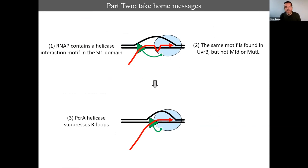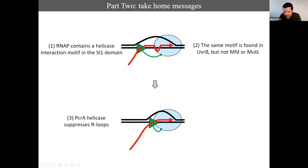Over-expressing a transdominant dead PcrA, or the native C-terminal domain but not a mutated version that can't bind RNA polymerase, led to increased R-loops. This is consistent with the interaction of PcrA with RNA polymerase reducing R-loop formation in cells. The same effect is seen in an E. coli deletion lacking UvrD. The take-home message is that RNA polymerase contains a helicase interaction motif in this lineage-specific insertion domain; the same motif is found in UvrB but not in MFD; and PcrA helicase suppresses R-loops, either by moving 3'-to-5' on the template strand or by backtracking RNA polymerase.